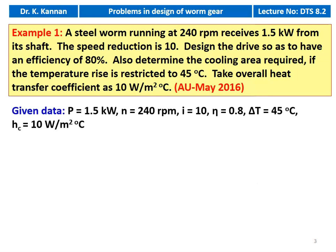Given data: power P = 1.5 kilowatt, speed N = 240 RPM, speed reduction i = 10, efficiency η = 80% = 0.8, temperature rise = 45 degree Celsius, heat transfer coefficient hc = 10 watts per meter square degree Celsius.